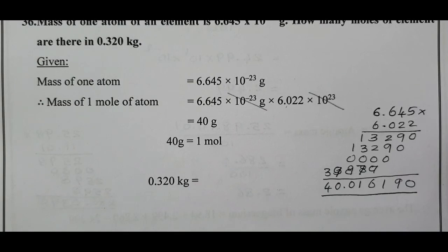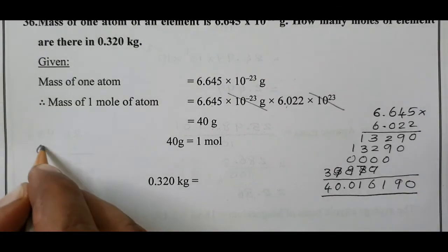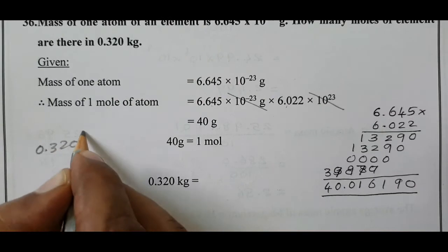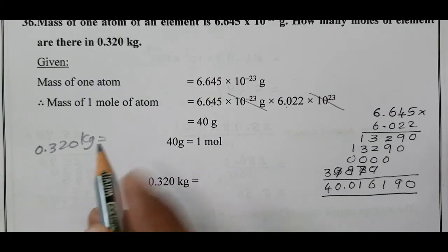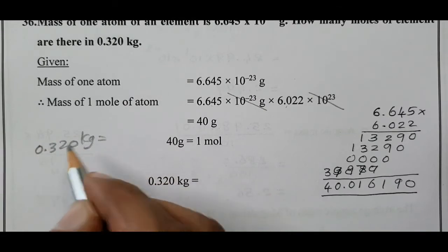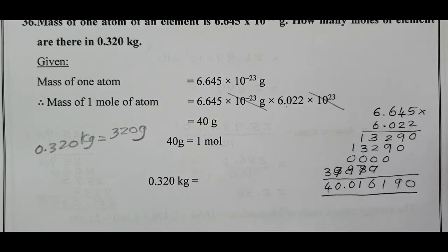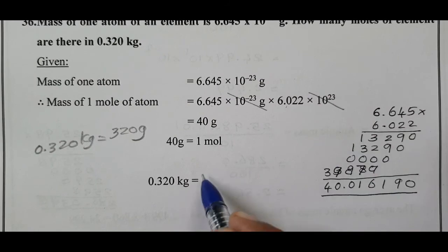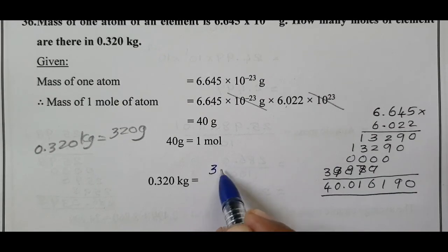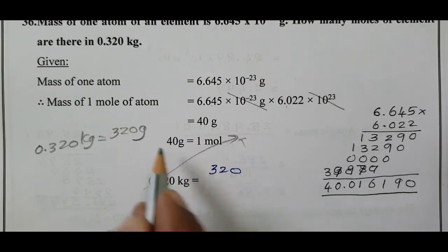So 40 gram equals one mole. Now, 0.320 kilogram equals how many grams? Since 1 kilogram equals 1000 gram, multiplying by 1000 gives 320 gram. Therefore, using the conversion: 320 grams divided by 40 grams per mole.